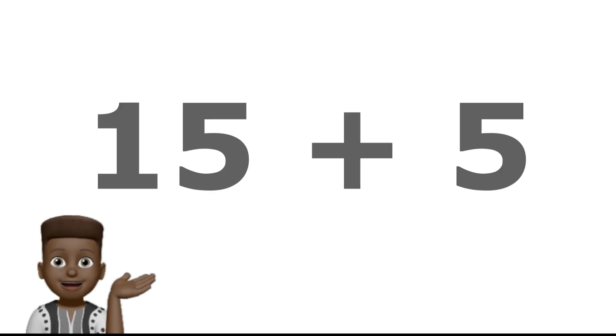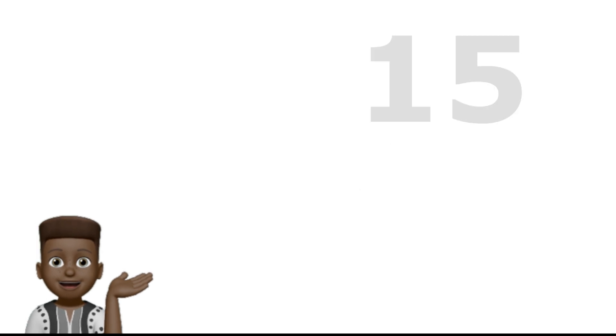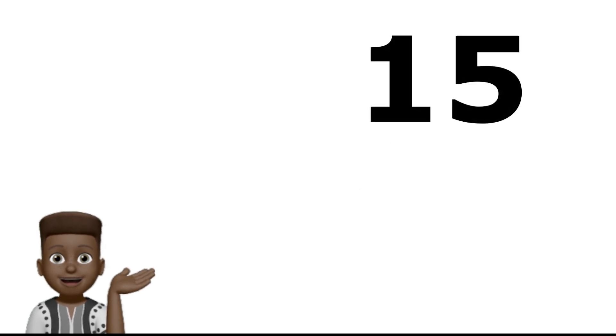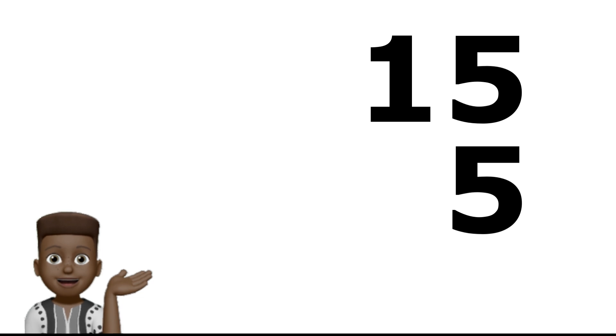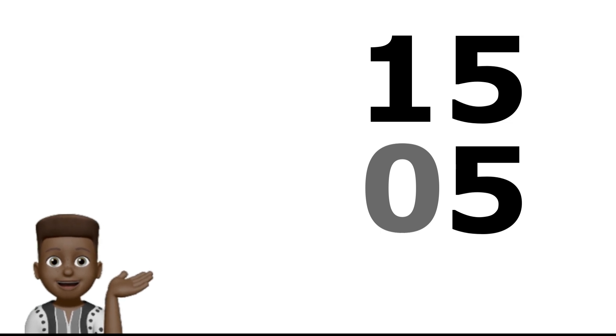Fifteen plus five. We write our fifteen. Great! Then, we write the five under the five on top. And add our invisible zeros in the ten side. Don't forget to put the plus in the middle of the fifteen and five. And the long equals to side under the numbers.